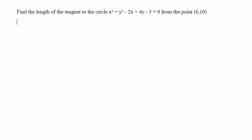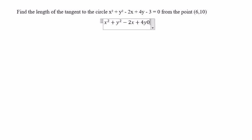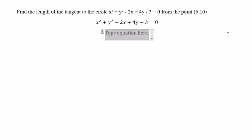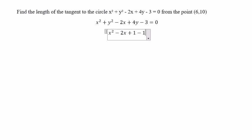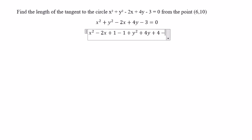We have x squared plus y squared minus 2x plus 4y minus 3 equals 0. We need to complete the square: x squared minus 2x plus 1 — so we need to subtract 1 — and y squared plus 4y plus 4 — so we need to subtract 4 — minus 3.